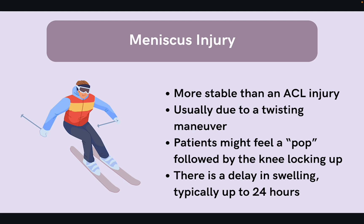Now let's talk about meniscal injuries in the knee. Whenever a patient tears their meniscus, they might feel a pop, and afterwards their knee really wants to lock up on them. A meniscus injury also tends to be more stable than an ACL injury, and most of the time the patient can still finish their game or activity despite the injury. Meniscal injuries are usually due to a twisting maneuver. Another difference is that there is a delay in swelling, typically up to 24 hours, which is a quick clue to differentiate it from an ACL tear.